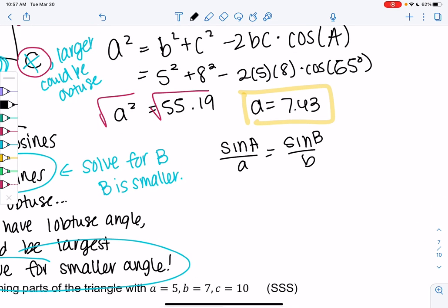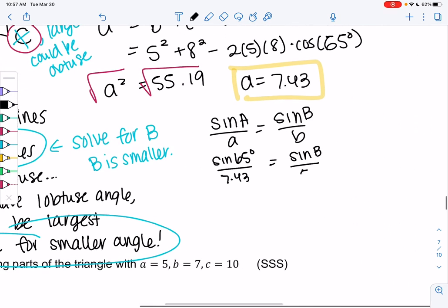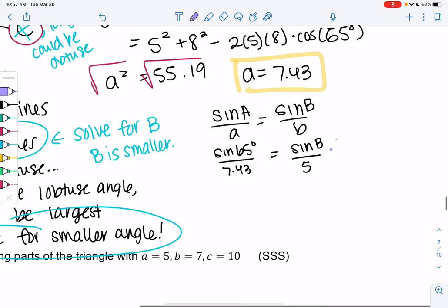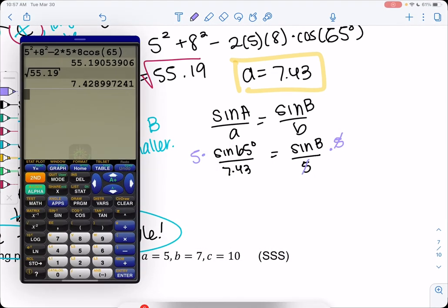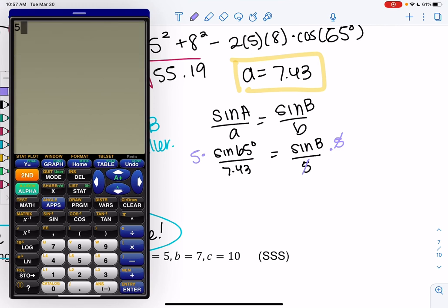So sine of A, A was 65 over a, which is 7.43. Sine of b, and b was 5. Times by 5. Pull out the calculator. 5 times sine of 65 divided by 7.43.